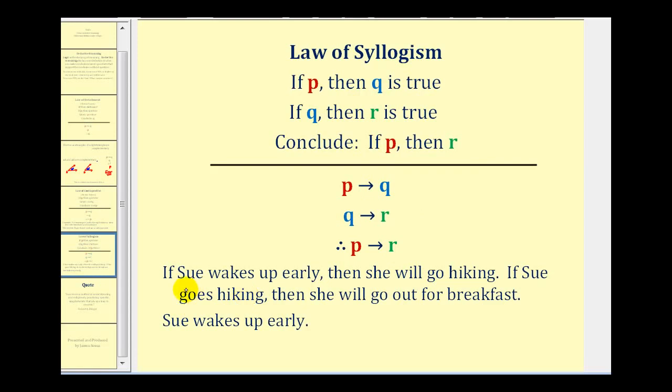Here's an example. If Sue wakes up early then she will go hiking. If Sue goes hiking then she will go out for breakfast. So if we're given that she wakes up early, we know she'll go hiking. And we also know if she goes hiking she'll go out to breakfast. So we can conclude that if she wakes up early, she will go out for breakfast. And again this is a valid form of deductive reasoning using the law of syllogism.